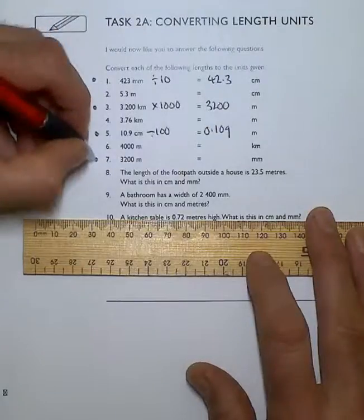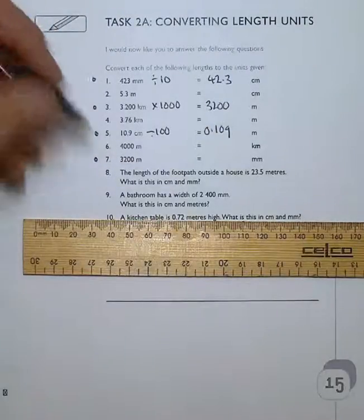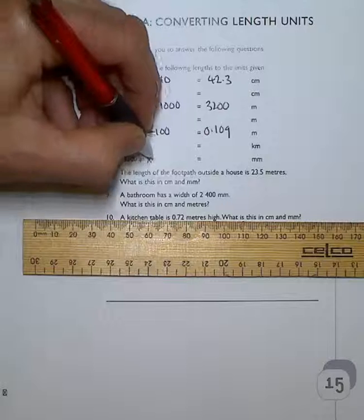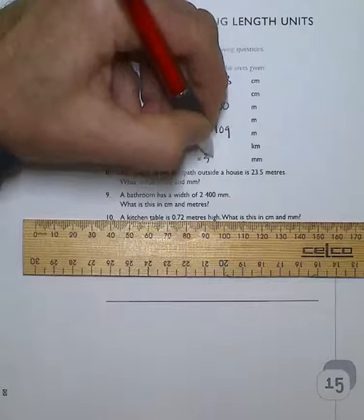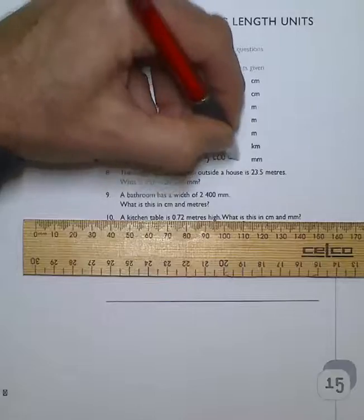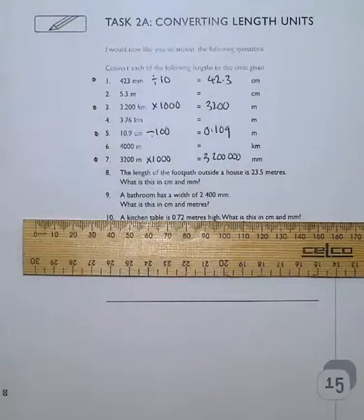And lucky last, there's a thousand millimeters in a meter. So if I multiply that by 1,000, I'll get 3,200,000 millimeters in the 3,200 meters.